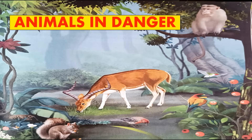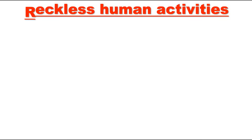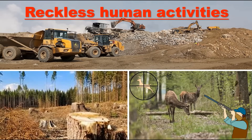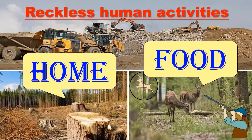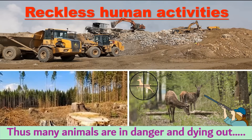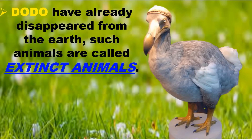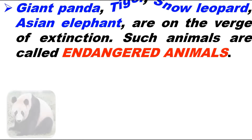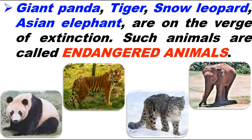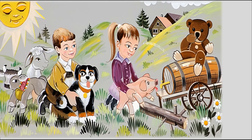Our next topic is animals in danger. Despite many adaptations, the lives of several animals are in danger because of destructive human activities such as mining, destruction of forests, and hunting and killing of animals. By doing so, we are taking away the home and food of many animals, and many are in danger of dying out. Animals like the dodo have already disappeared from the earth and are known as extinct animals. Animals such as the giant panda, tiger, snow leopard, and Asian elephant are on the verge of extinction and are known as endangered animals. We should be careful that our activities do not harm animals or their habitat.